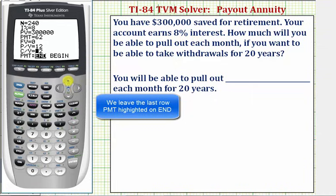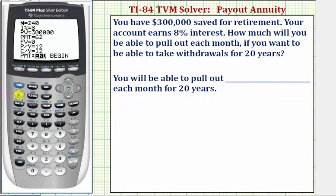We'll go back up to payment and press alpha enter to solve for payment. Notice how the investment company will have to pay us $2,509.32 each month in order to have a zero balance after 20 years, which means you'll be able to pull out $2,509.32 each month for 20 years.